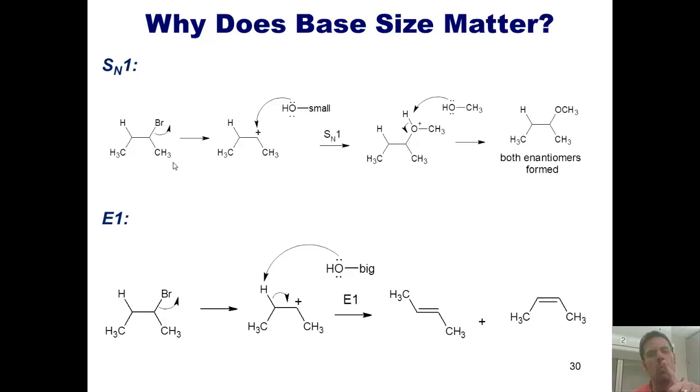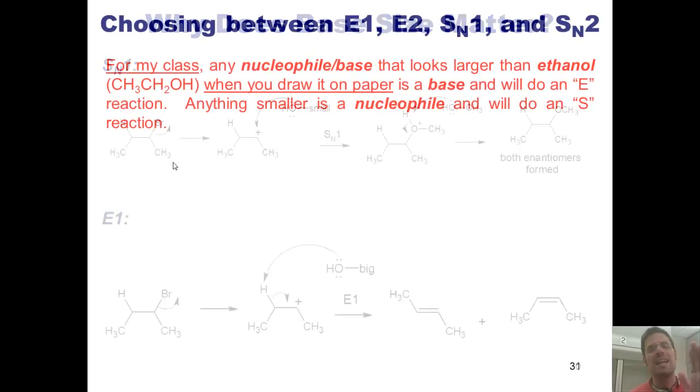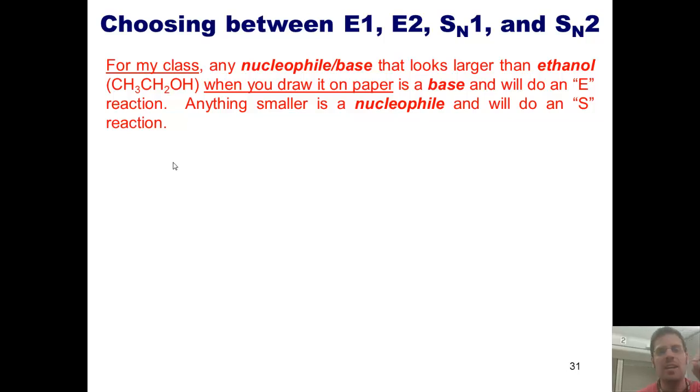So, you might ask then, where do I draw the line regarding size? For my class, and the students who take my class, any nucleophile slash base that looks larger than ethanol, whose structure is shown here, when you draw it on paper, is a base and will do an E reaction. Anything that's equal to or smaller than ethanol on paper is a nucleophile and will do an S, or substitution reaction.